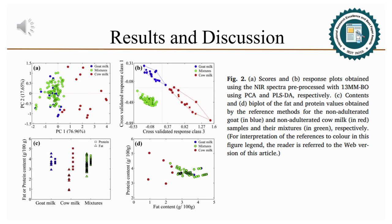To investigate this, a biplot of fat and protein content of all non-adulterated goat and cow milk and also goat milk adulterated with cow milk are presented. To confirm that only the information of the fat and protein contents alone are insufficient to identify the adulteration.